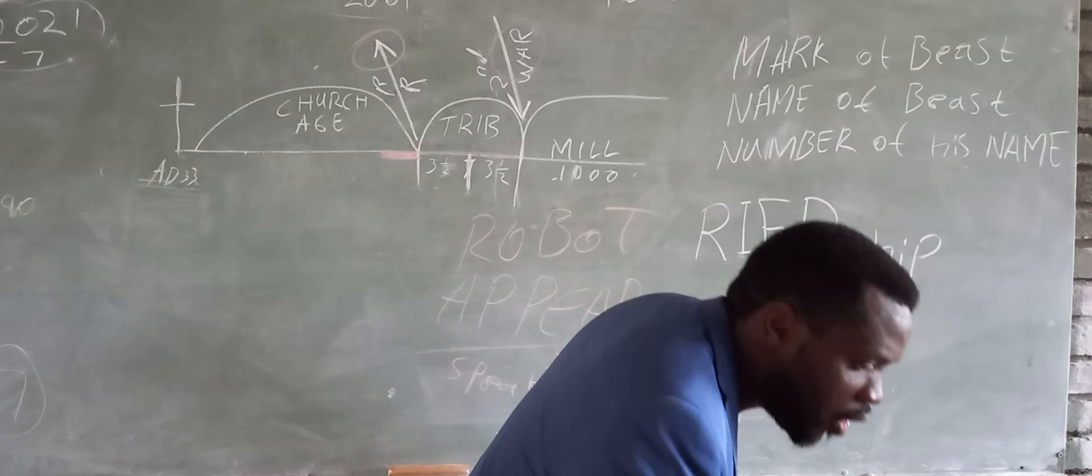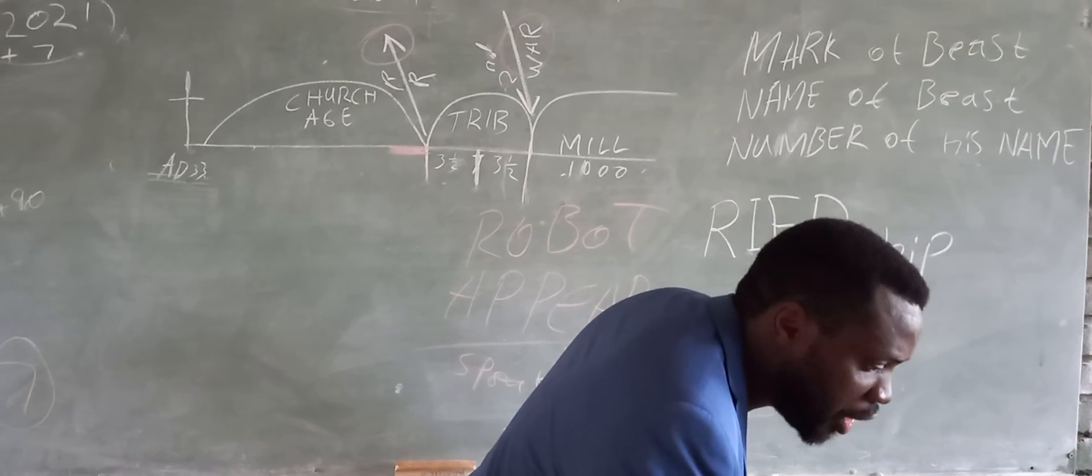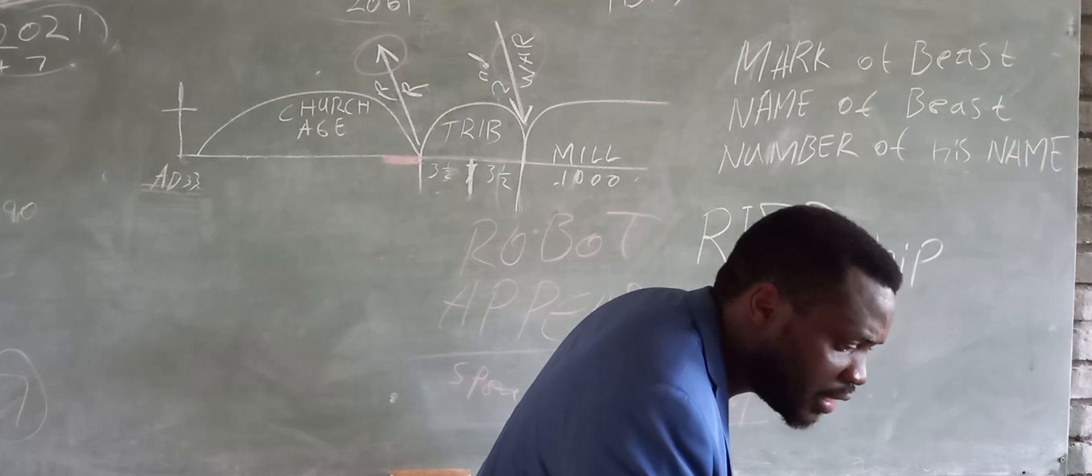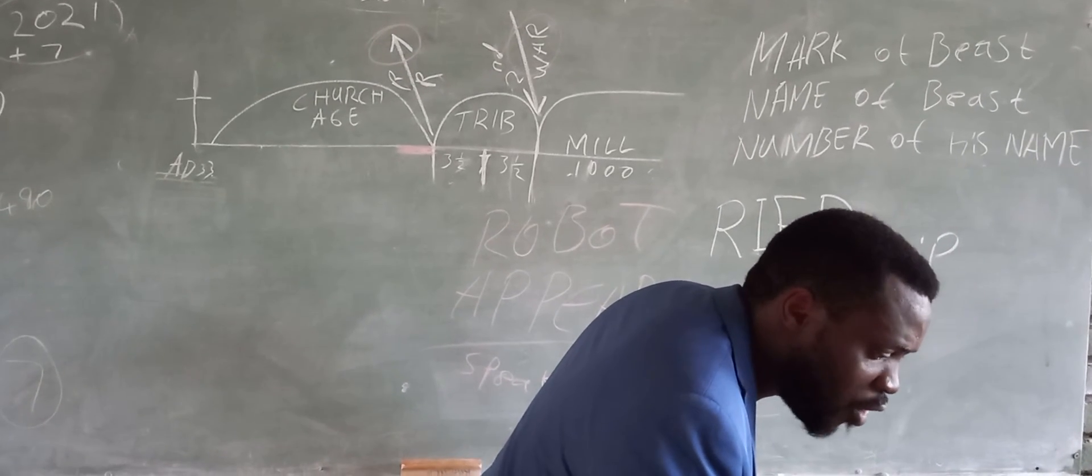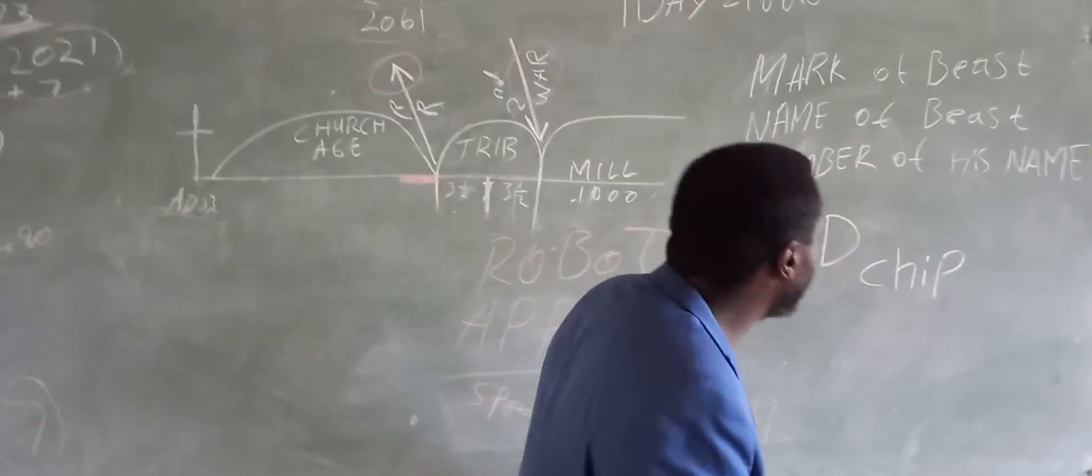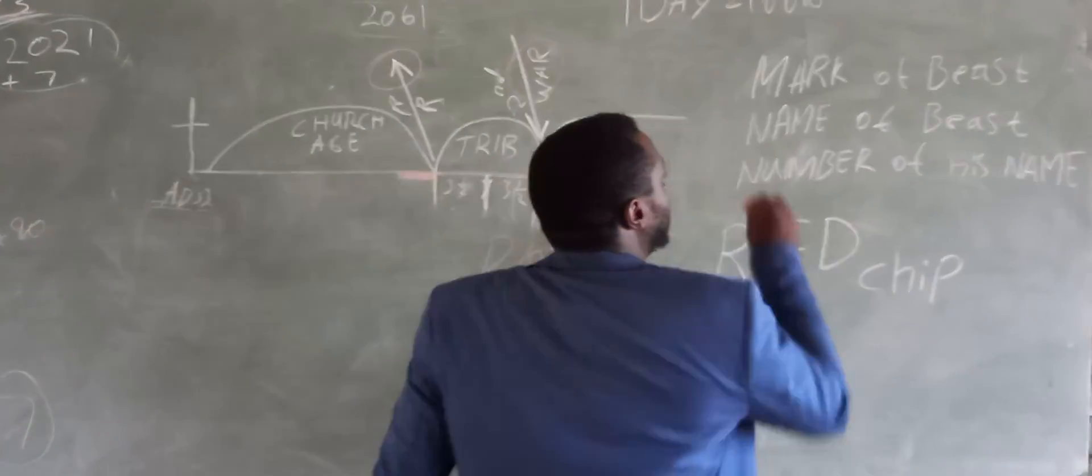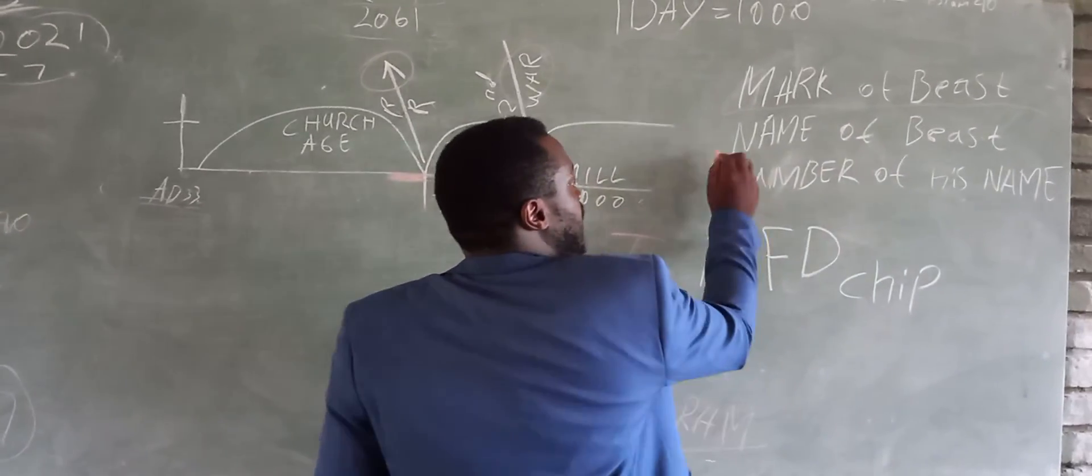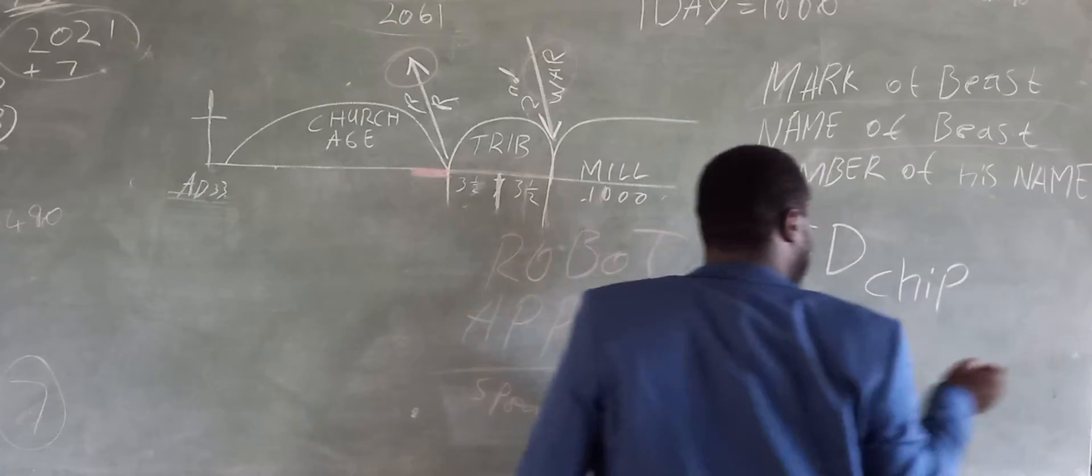Let me read verse 16: He causes all, both small and great, rich and poor, free and slave, to receive a mark on their right hand or on their forehead. And no one may buy or sell except one who has the mark.